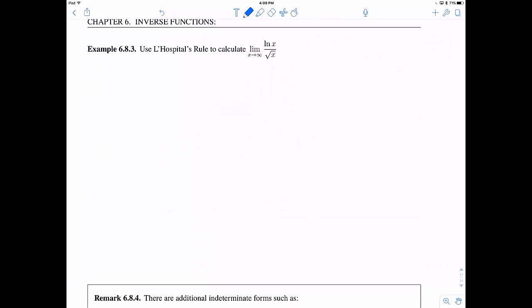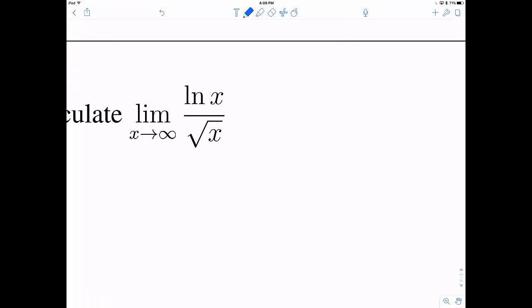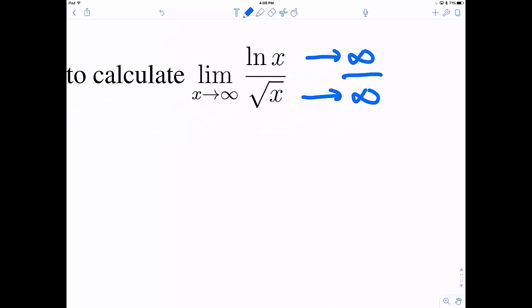So let's go ahead and try it out here on an example. So I'll use L'Hopital's rule to calculate out this limit. So we see that as x goes to infinity, we actually have both the numerator and the denominator go to infinity. So this is an indeterminate of form infinity over infinity.